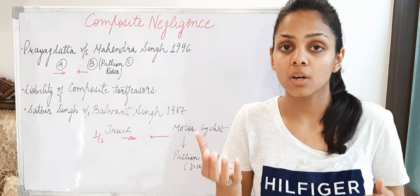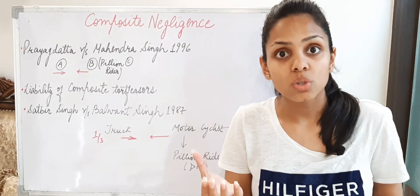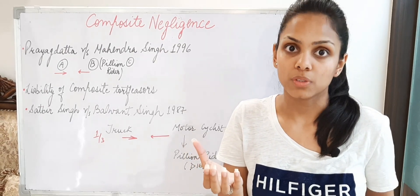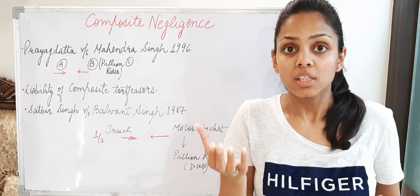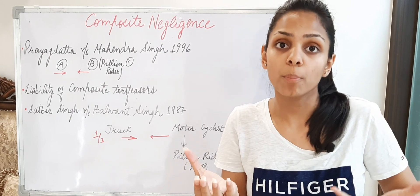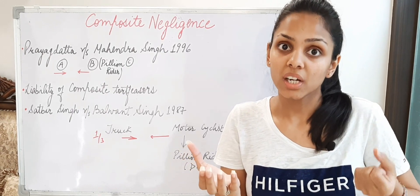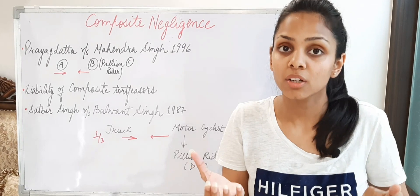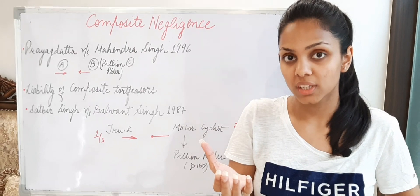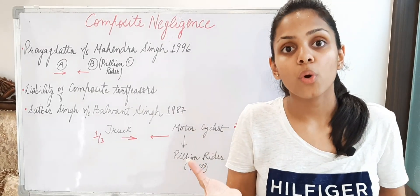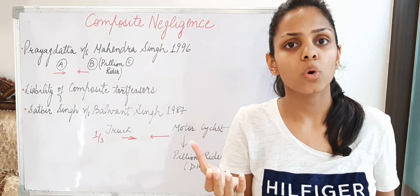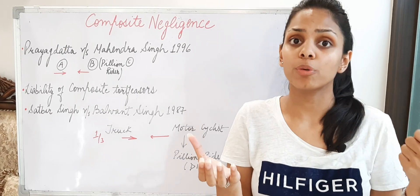So we can say that composite negligence means when an injury is sustained by the plaintiff party due to the negligent act of two or more persons. Then this third party — this plaintiff party — is entitled to claim compensation from these people. They are termed as composite tortfeasors, because jointly together they have committed the tort of negligence. That is why they are called joint tortfeasors or composite tortfeasors. An important point to note is that the plaintiff party has no negligent act on their part — as in the case of contributory negligence.